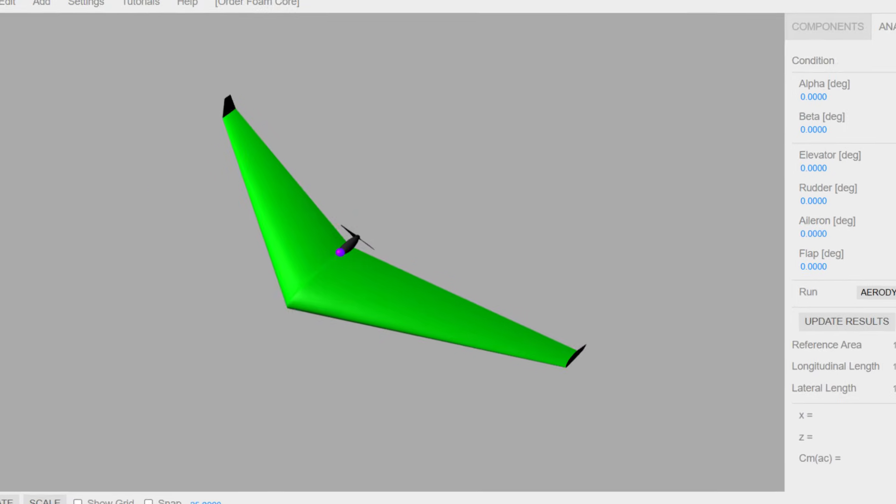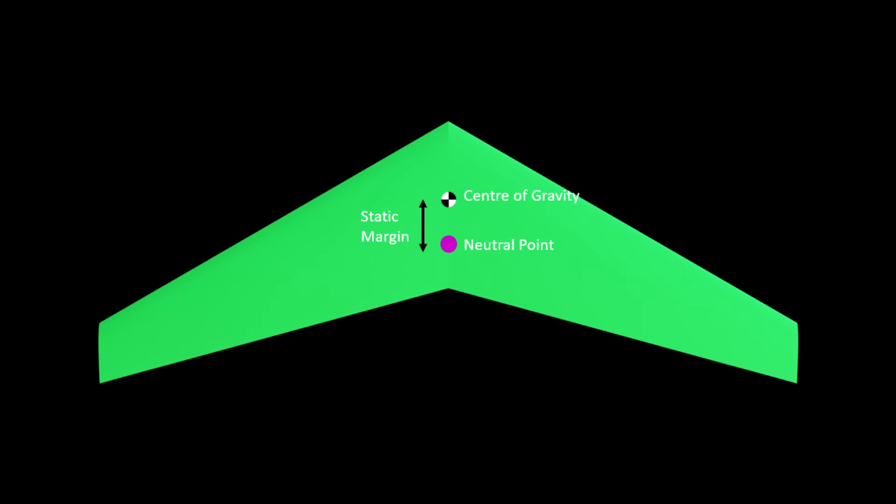Placing the CG ahead of the NP is one of the requirements for stable flight. When in doubt, you can always make a cardboard or foam board model of your design and add weights to check if it is stable or not.